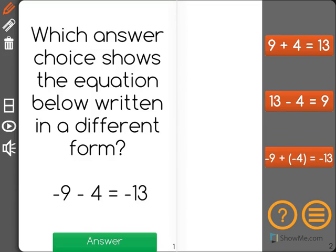Which answer choice shows the equation below written in a different form? Negative 9 minus 4 equals negative 13.